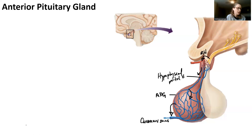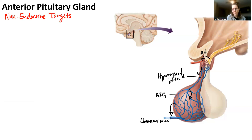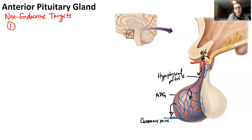The anterior pituitary gland has two different types of hormones it can release: non-endocrine targets and endocrine targets. Non-endocrine targets means the hormone released from the anterior pituitary gland does not target another endocrine gland to release a hormone. One of those is melanocyte stimulating hormone. An RH hormone from the hypothalamus targets the anterior pituitary gland, and the anterior pituitary gland releases melanocyte stimulating hormone.